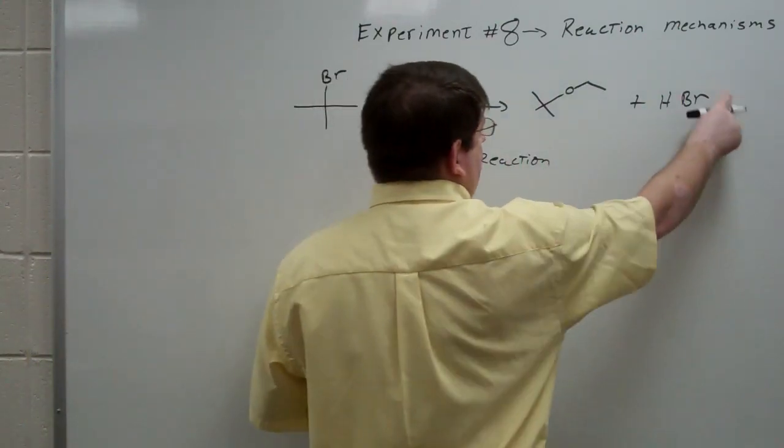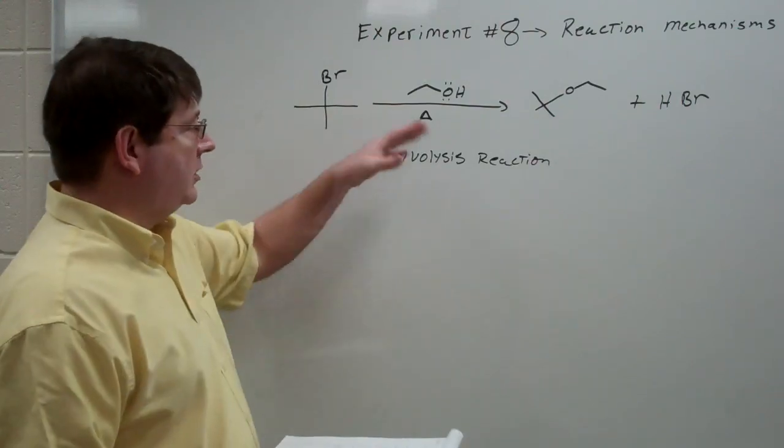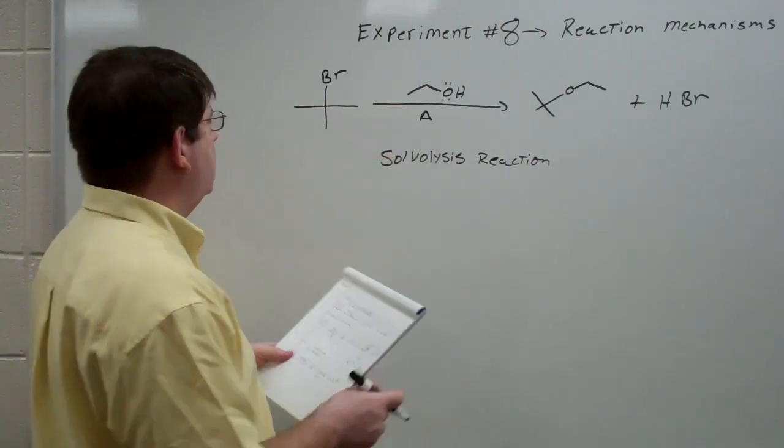Because the solvent is the ethanol and it's also a reactant. So it reacts with the alkyl bromide in this case to give us an ether plus HBr. And we could monitor this reaction by looking for the appearance of HBr, by testing the acidity, for example. However, that's a fairly slow process.